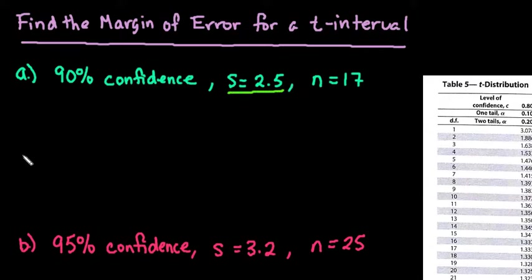Just a reminder what the formula is, the margin of error formula is E equals, and some textbooks use ME instead of just E. It equals the t-score, which could be t-star or tc or t sub df. There's a lot of different notation, it's just your t-score for that level of confidence, times s divided by the square root of the sample size. So those are the things that we have to know in order to find this.